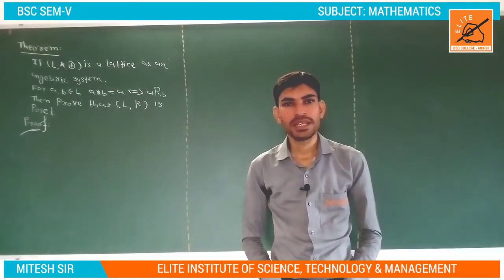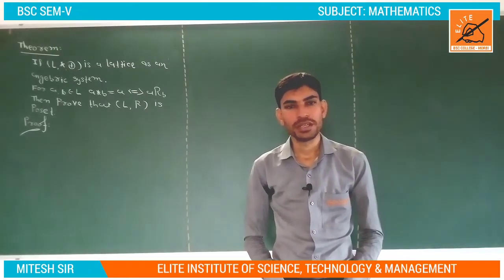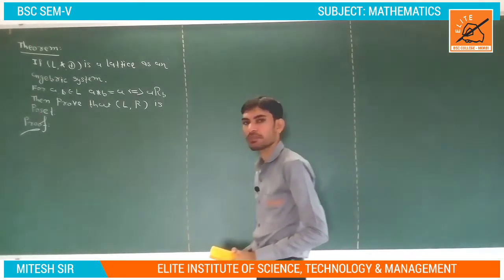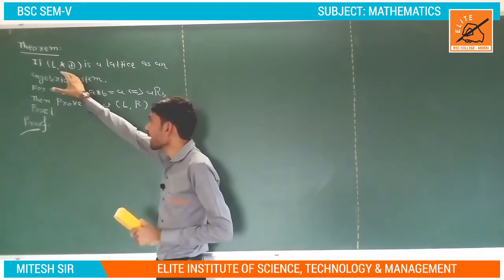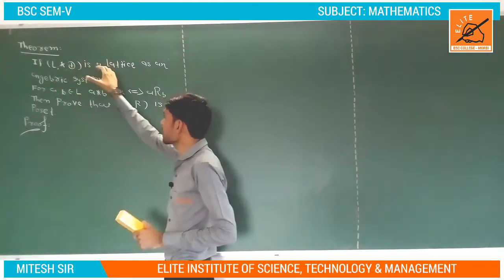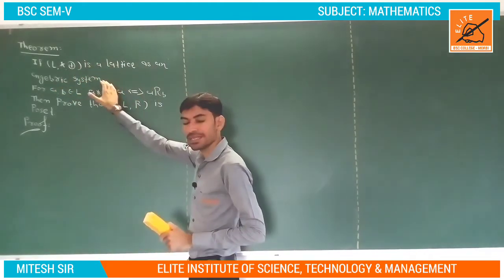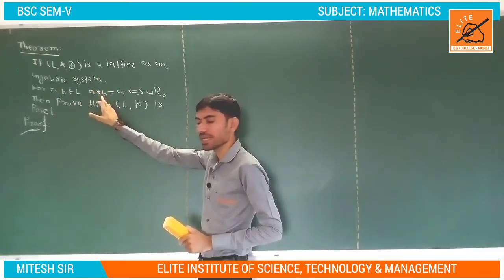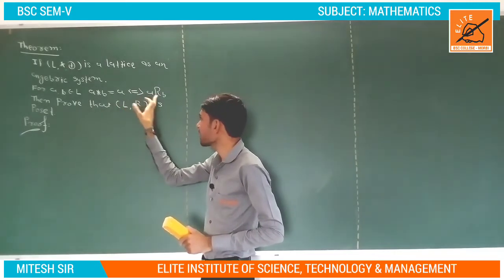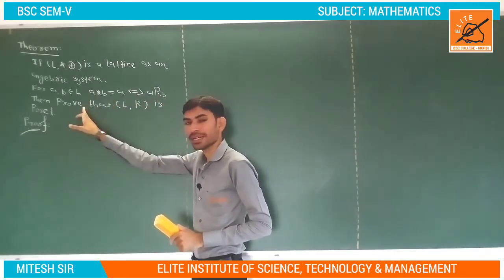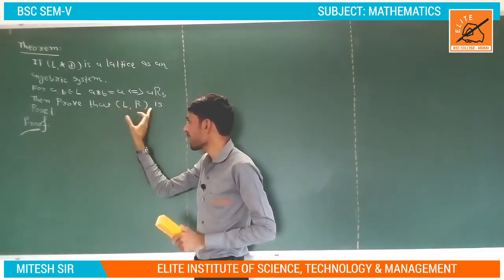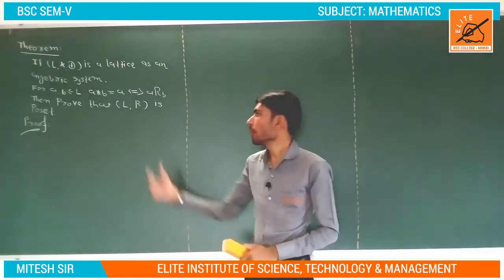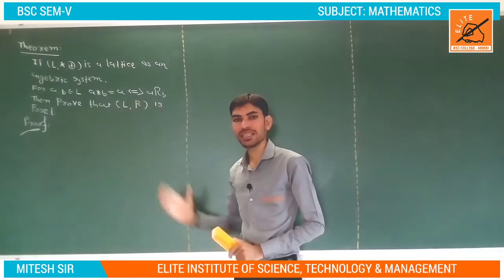In this lecture we will discuss two important theorems. The statement of the first theorem: if (L, ★, ⊕) is a lattice as an algebraic system, for a, b belonging to L, a★b = a if and only if a is related to b, then prove that set L with the relation R is a poset.